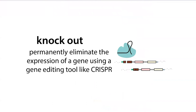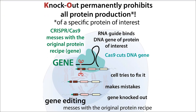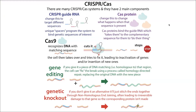With a knockout, you're eliminating the cell's ability to ever make that protein again by messing with the original gene. This is done with a CRISPR-Cas system, where a CRISPR RNA serves as a guide to direct the Cas machinery to a gene of interest. The Cas protein cuts that gene. The cell tries to fix it, but sometimes makes mistakes, which can deactivate that gene and prevent any protein from ever being made from it.